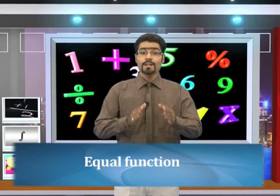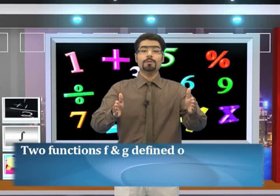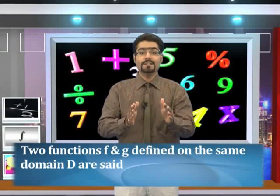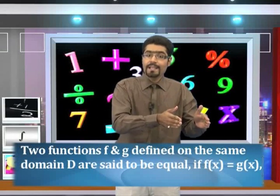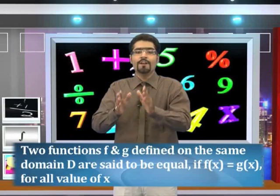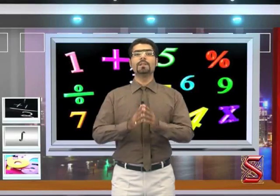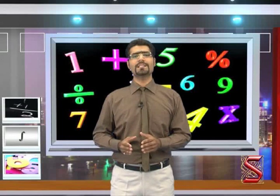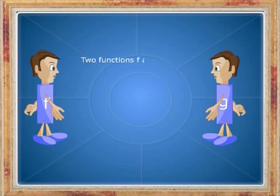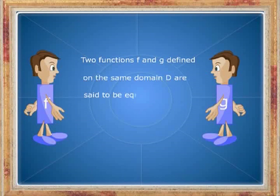Equal functions: two functions f and g defined on the same domain D are said to be equal if f of x is equal to g of x for all values of x belonging to domain D. Let us try to understand this with the help of examples.